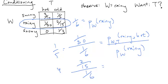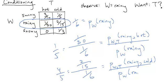This thing is equal to probability of W being equal to rainy, cold, divided by P_W of rainy.